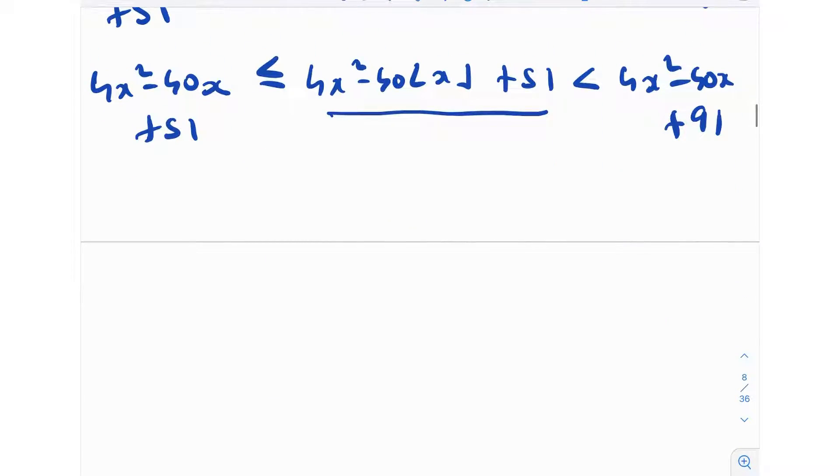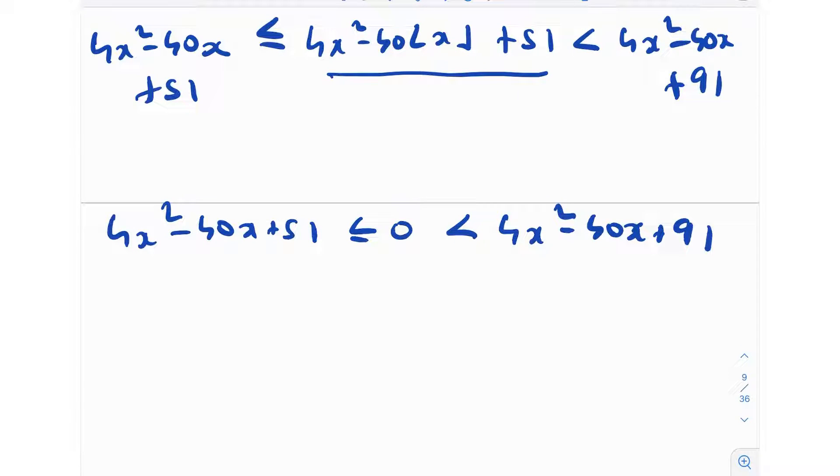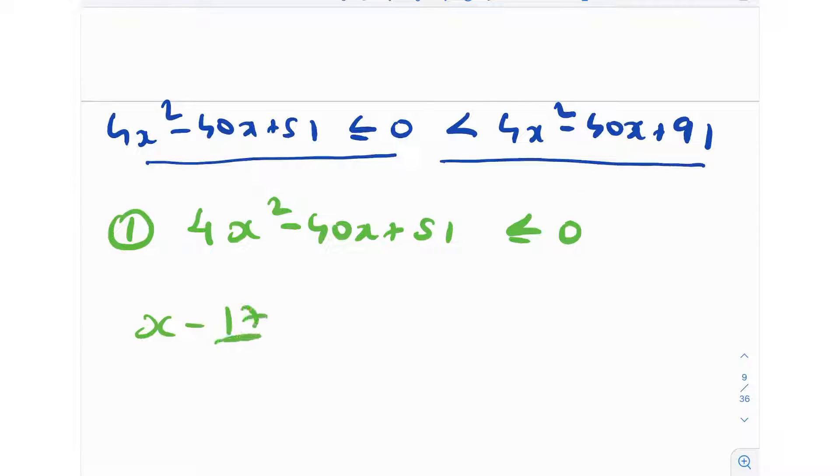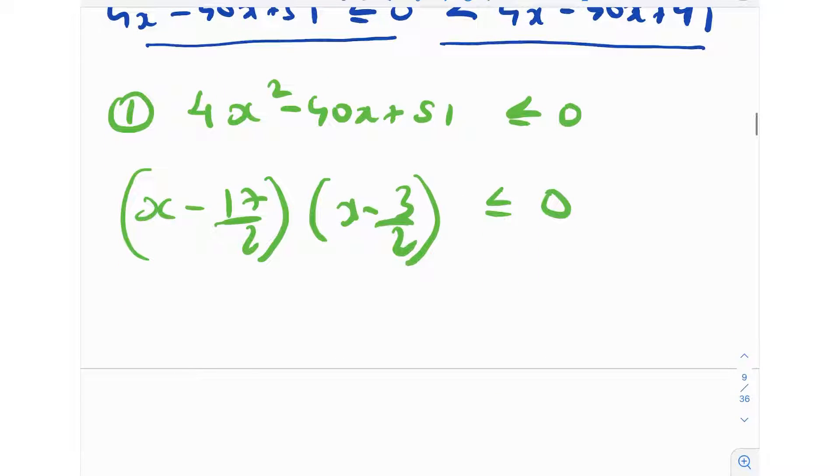Now we have an algebraic question. 4x² - 40x + 51 ≤ 0, which is less than 4x² - 40x + 91. We've essentially transformed it. Initially, we had that floor thing in the question, but we essentially proceeded to remove that. So the first inequality is 4x² - 40x + 51 ≤ 0. It's going to be very easily factorized as (x - 17/2)(x - 3/2) ≤ 0. We can figure out the roots via quadratic formula. Because this is less than or equal to 0, by wavy curve method, we know that x must belong to [3/2, 17/2] closed interval.